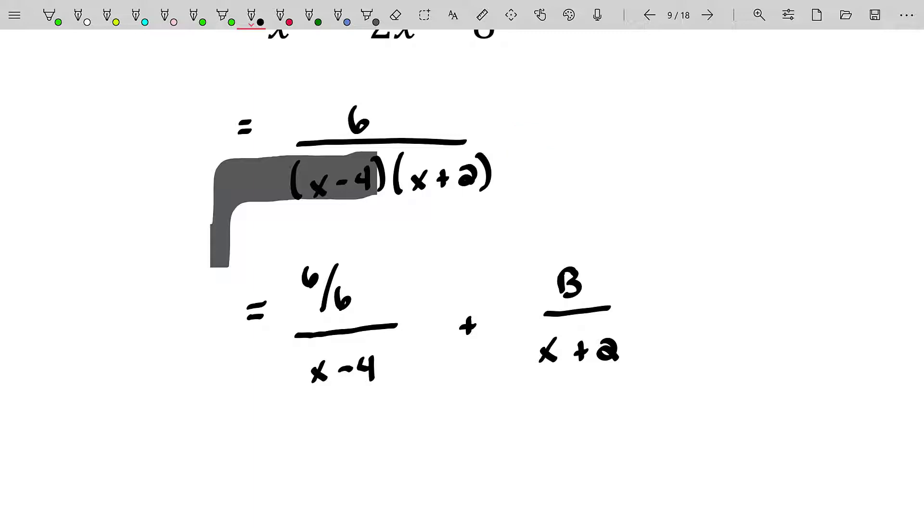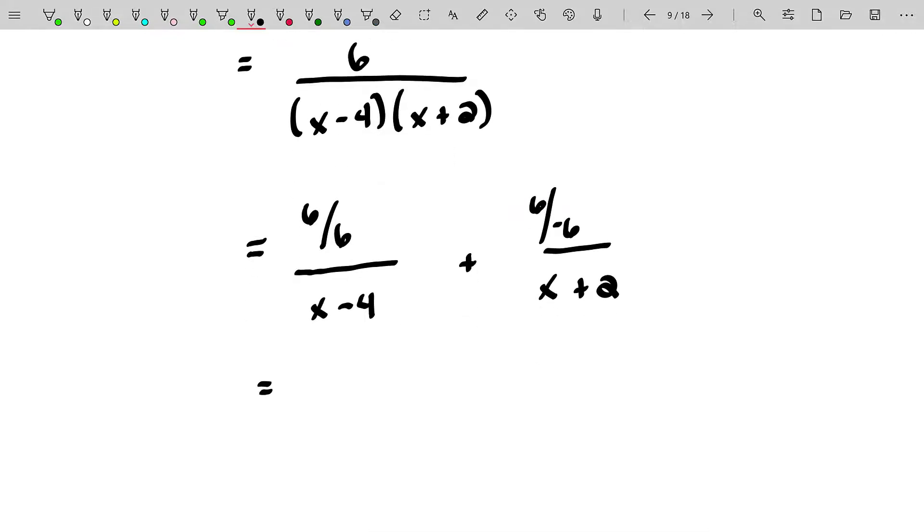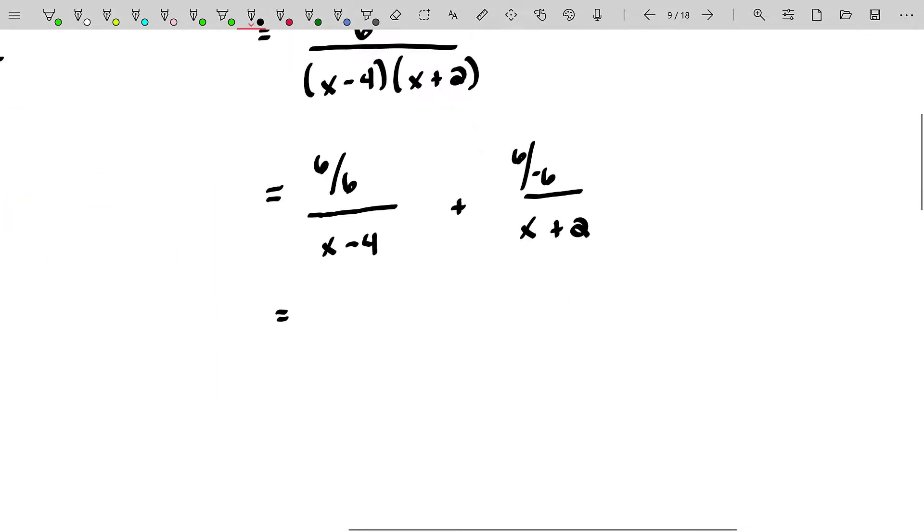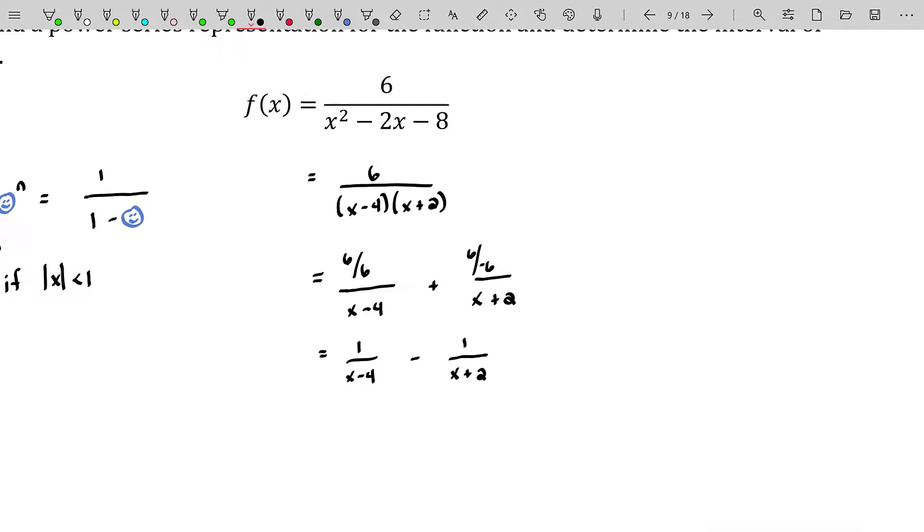Let's see that again. But this time we're going to cover up the other factor. Covering up X plus 2, we're going to let X equal negative 2 in the remaining factors of that fraction. And if you do that, you will get a 6 in the numerator and a negative 2 minus 4 or a negative 6 in the denominator. And this allows us to say the partial fraction decomposition of that original function is going to be 1 over X minus 4 minus 1 over X plus 2. That's a very quick way to use partial fraction decomposition.